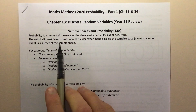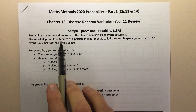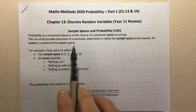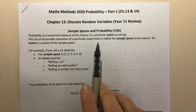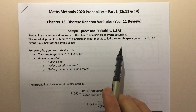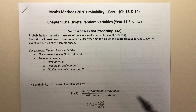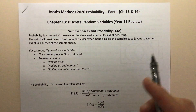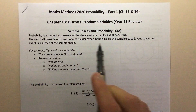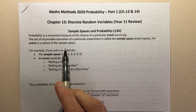The set of all possible outcomes — outcomes being a word for results — so the set of all possible outcomes or results of a particular experiment is called the sample space. The sample space represents all the things that can happen when a trial or experiment takes place. An event is a subset of the sample space.